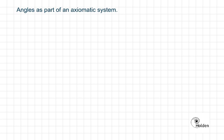Angles are part of an axiomatic system. In mathematics we love axiomatic systems because these are simple things we can all agree on, but then build on these to make bigger, wider inferences.